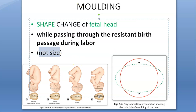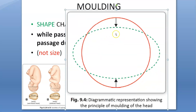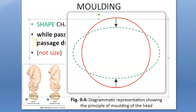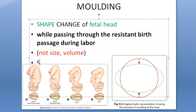It is not a change in size - it is the change in shape. Look at this image: it is getting more oval. That is it. The size and volume do not change. What is changing is the shape of the fetal head while passing through the resistant birth passage during labor.